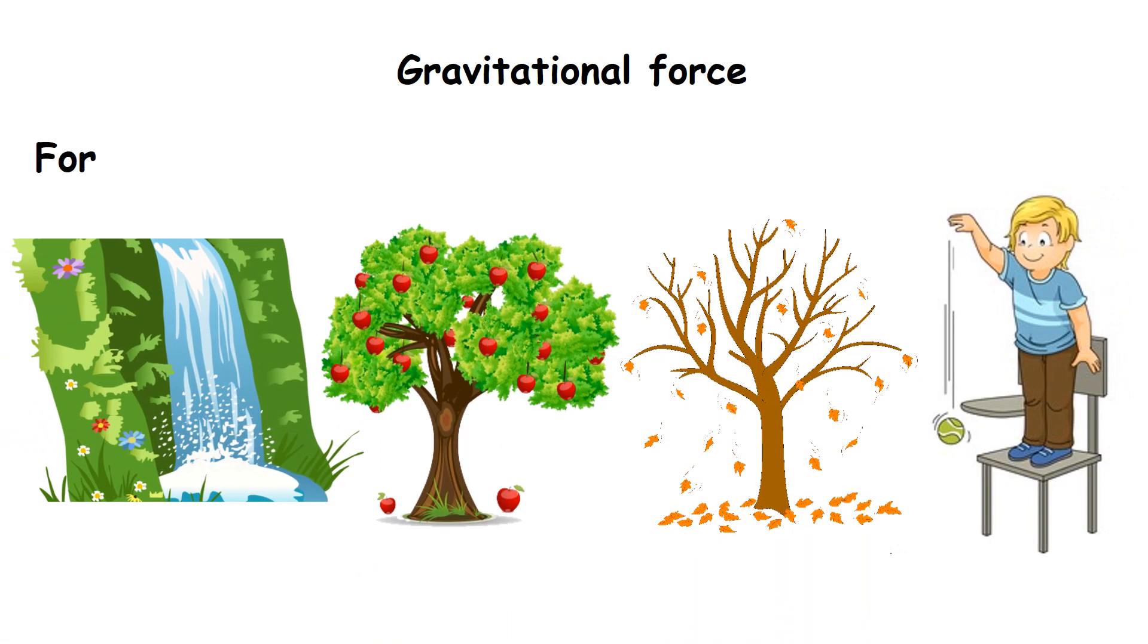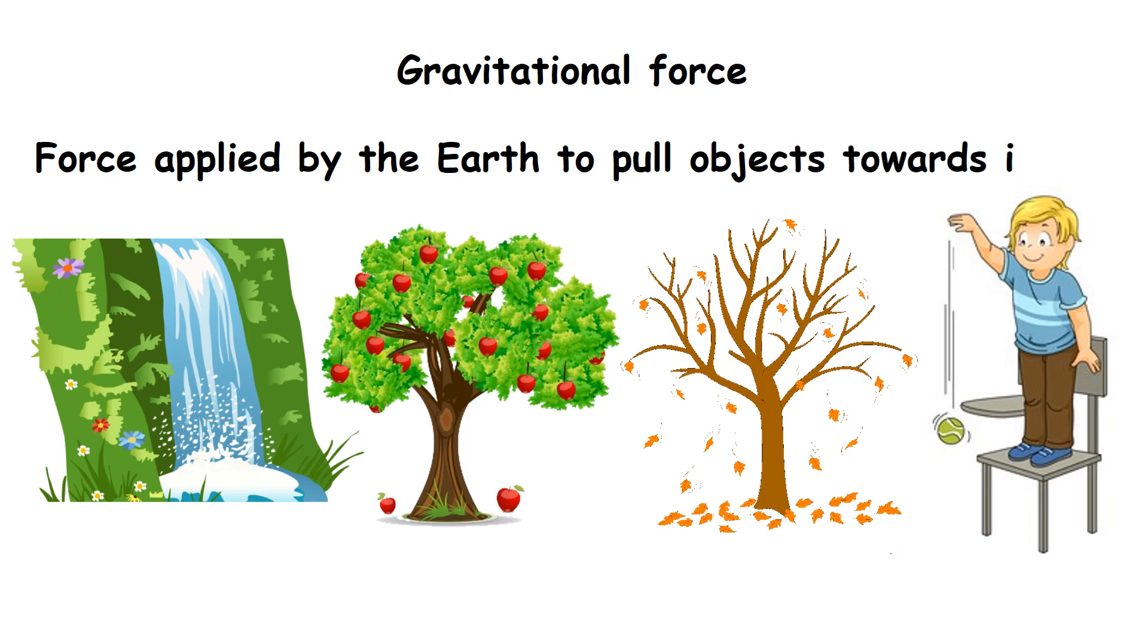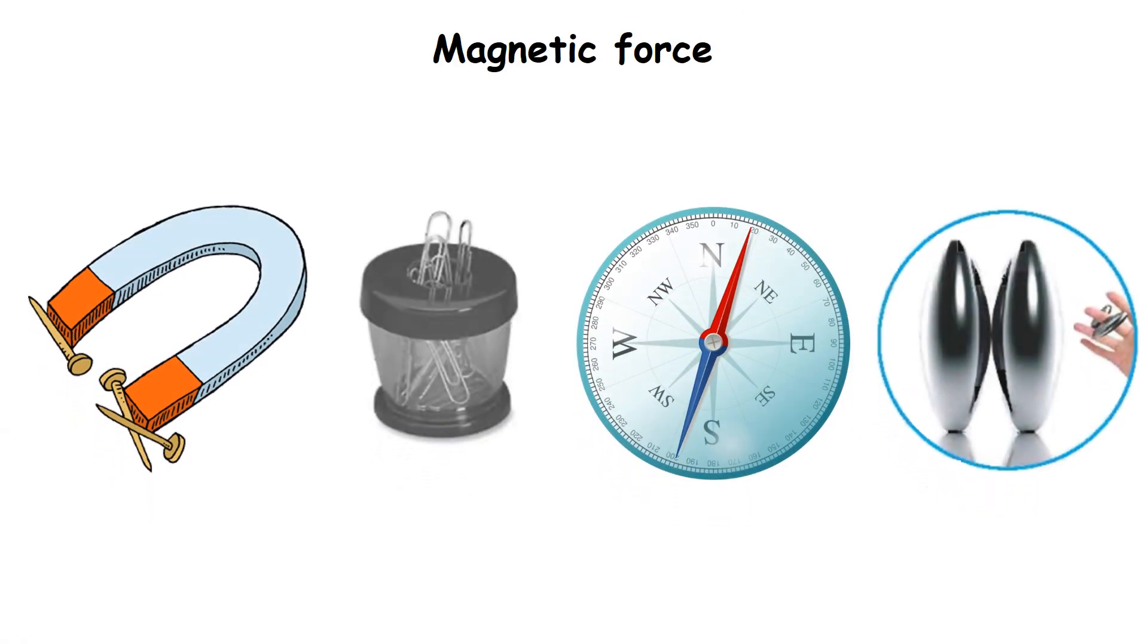Gravitational force is the force applied by the earth to pull objects towards itself. Magnetic force is the force that attracts things. A magnet is a material that attracts things made of iron.